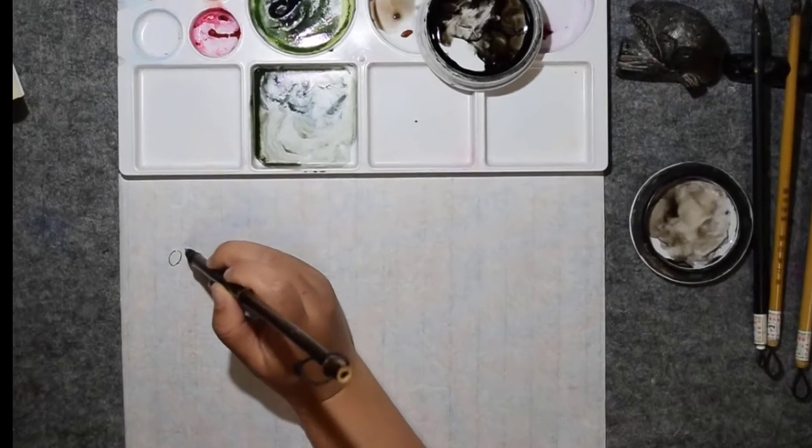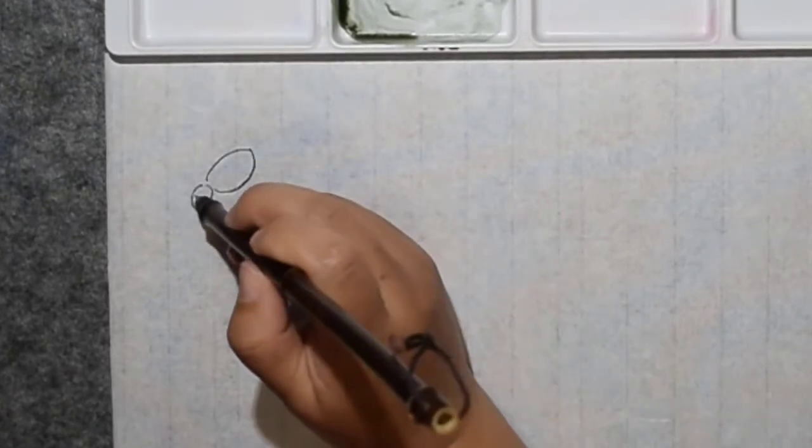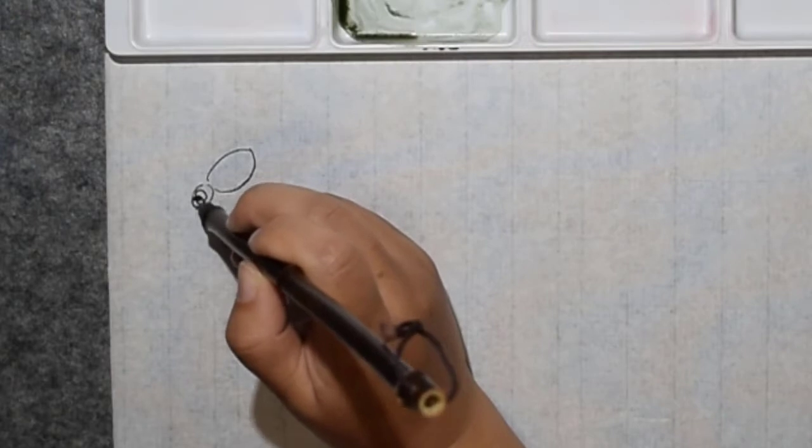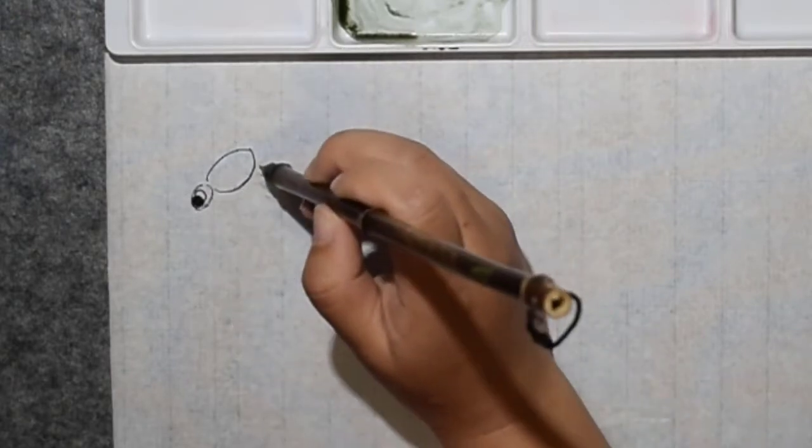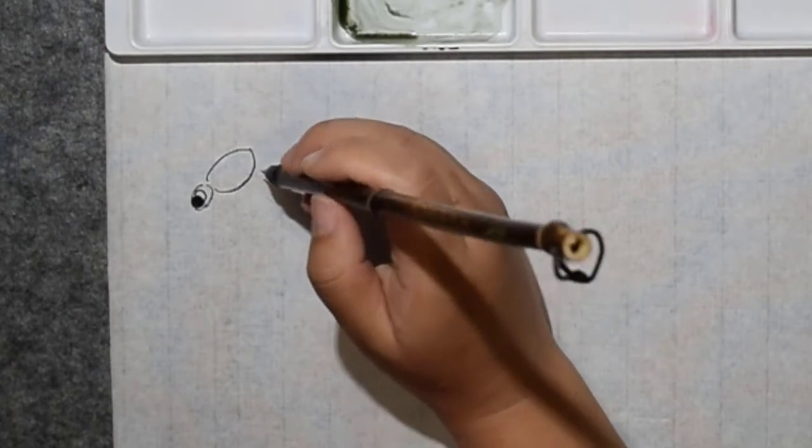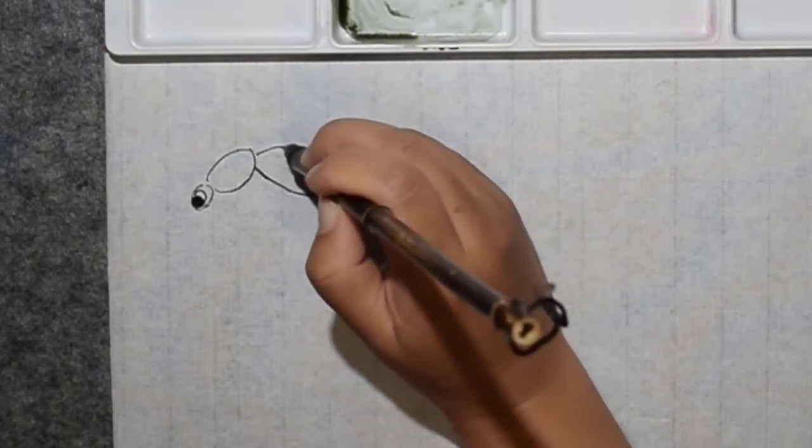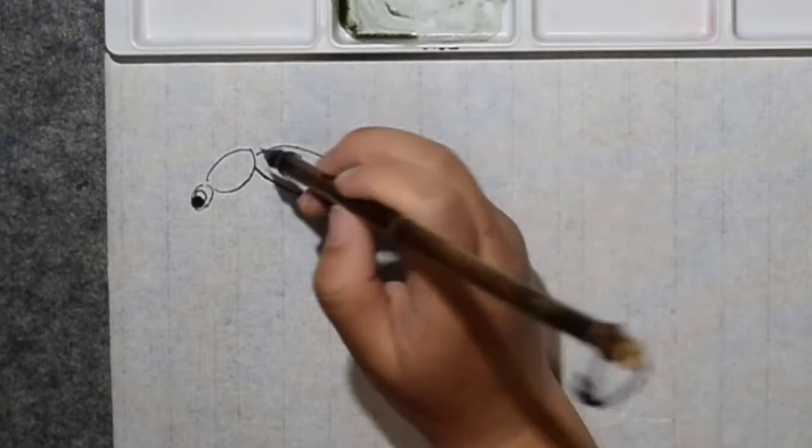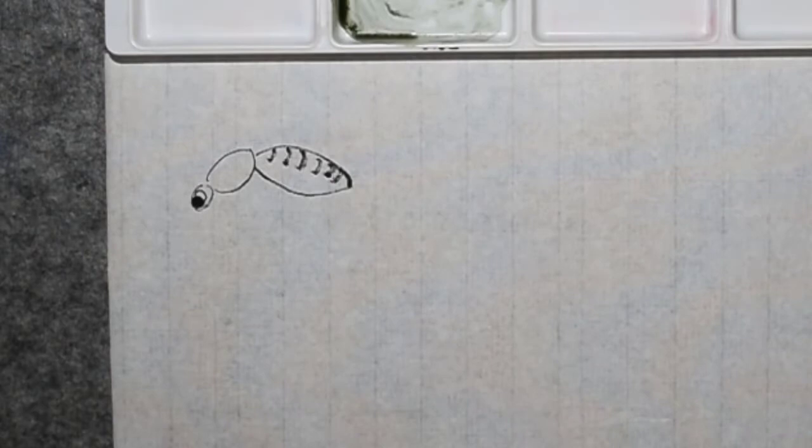On the head there are big eyes here, big eyes here, and then there's their abdomen. This is the abdomen. On the abdomen there's a little bit of pattern here.